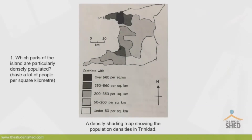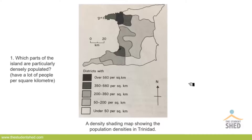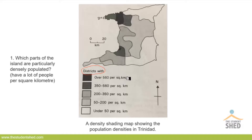Let us look at an example of a choropleth map. We're looking at a density shading map showing the population densities in Trinidad. When you see a map like this, the first thing you ought to do is take a look at the legend to see what the legend means.